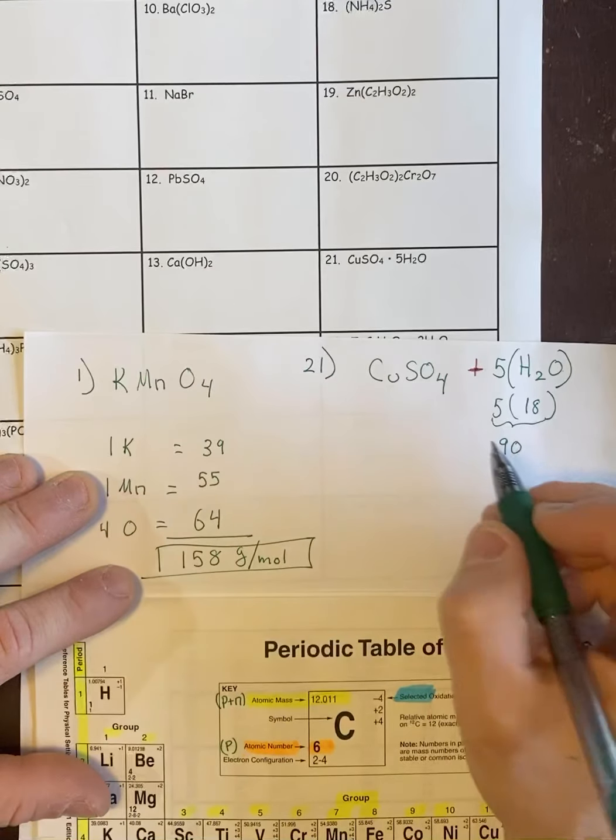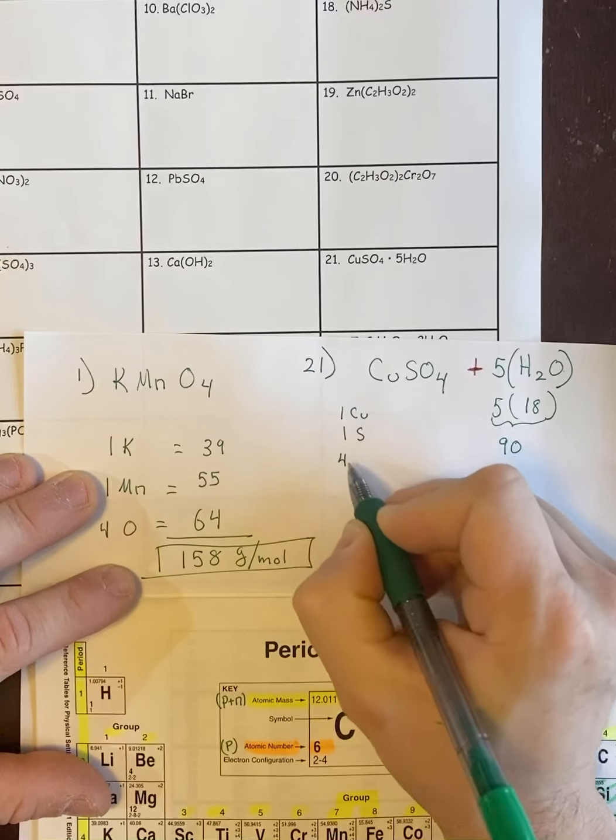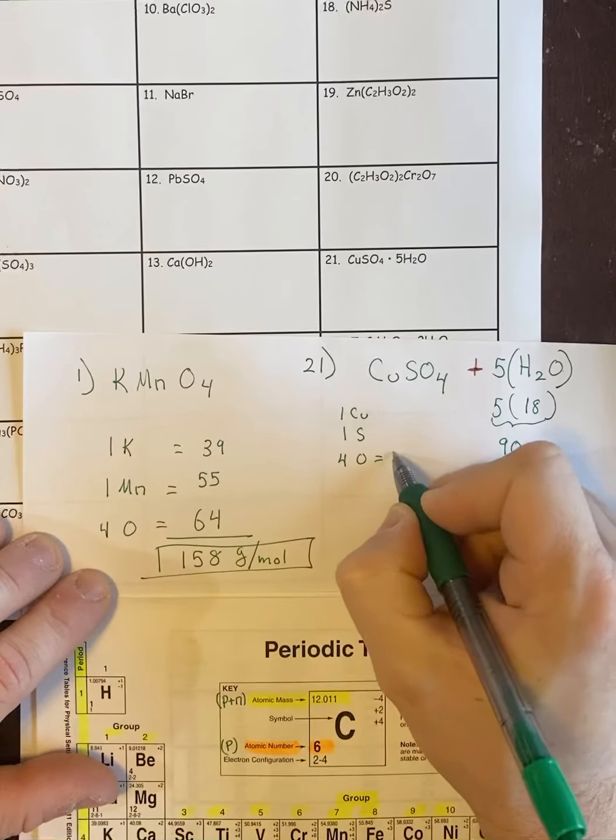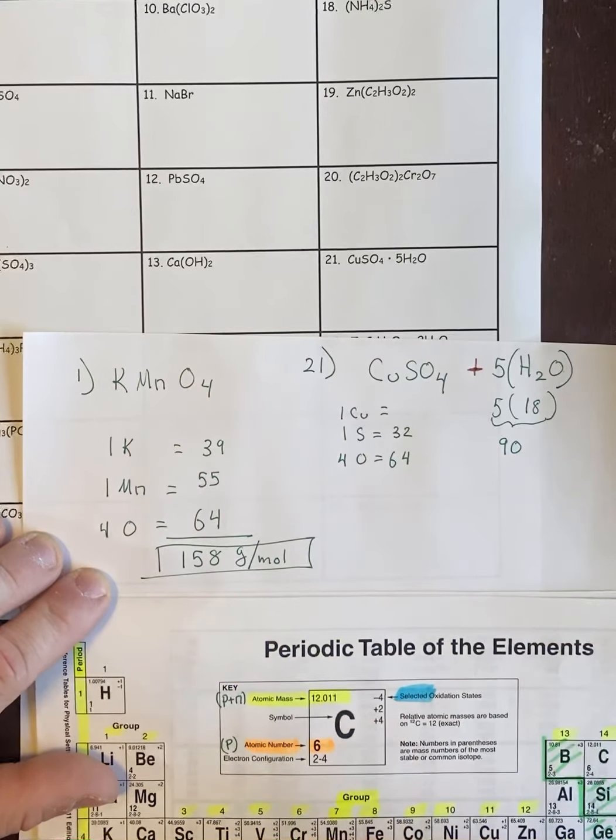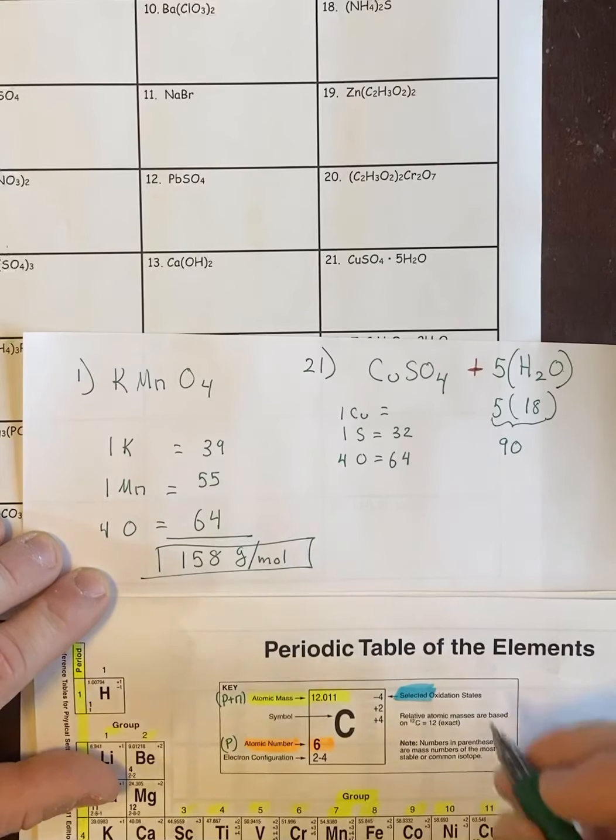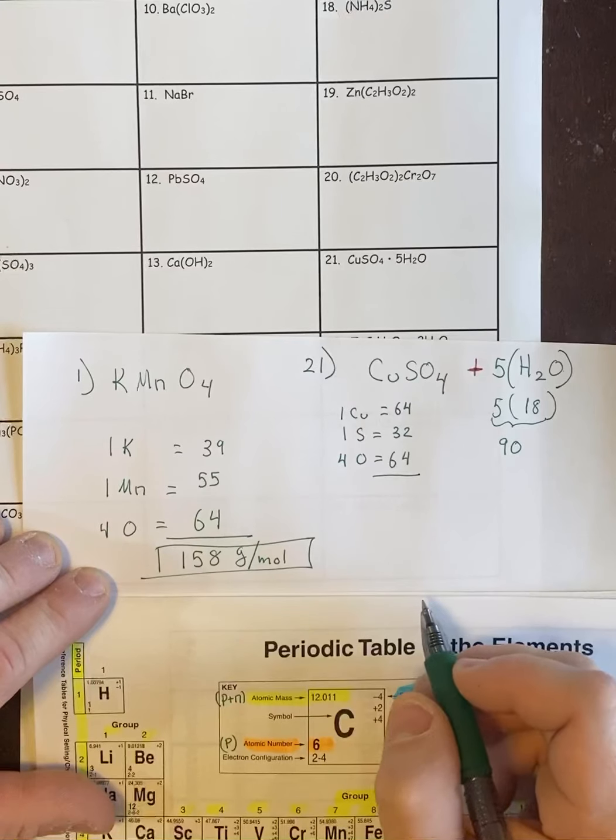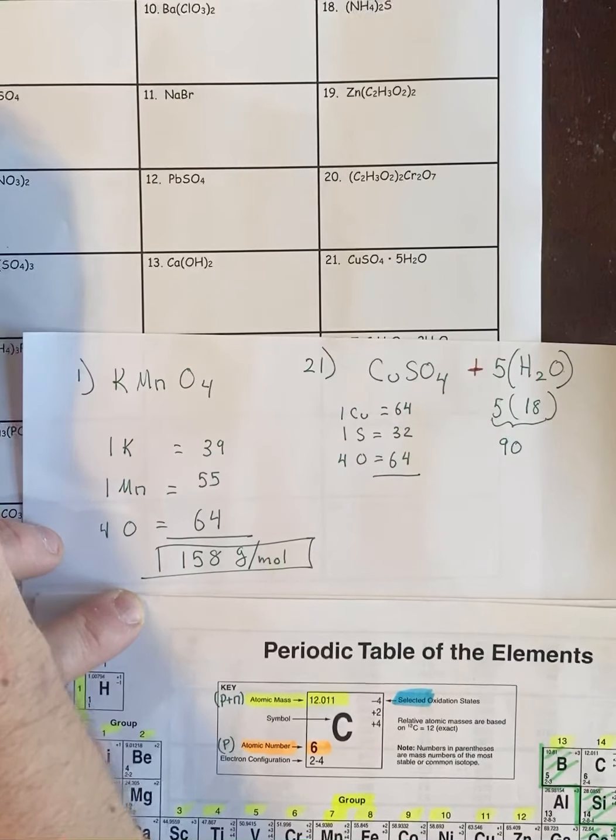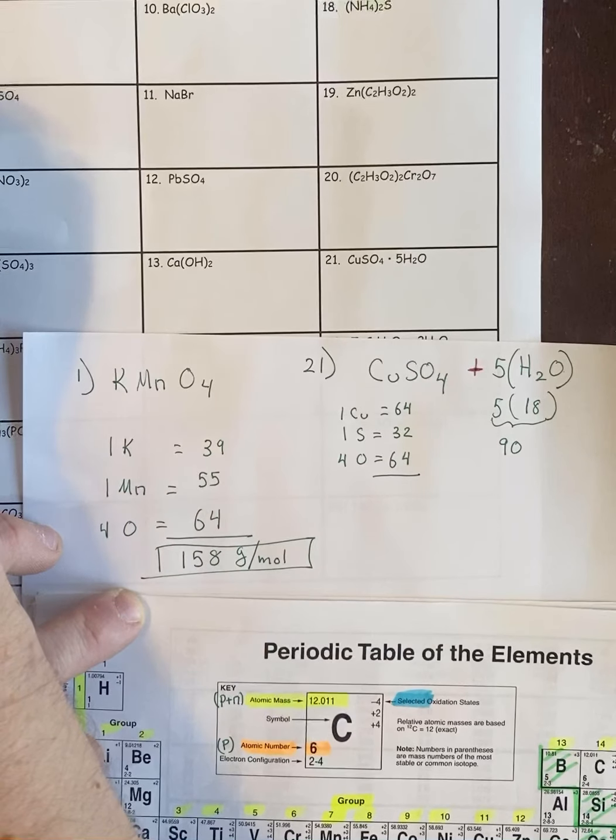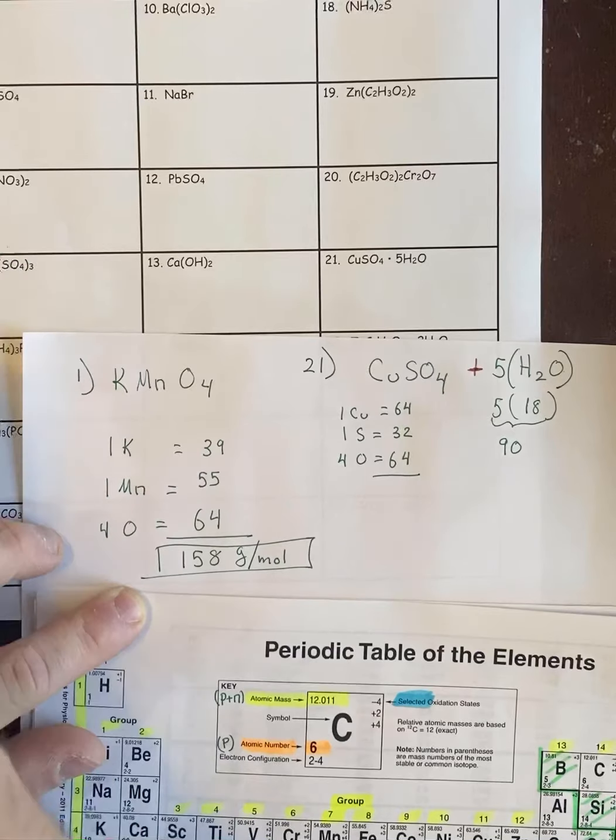Then you do your CuSO4, which is one Cu, one S, and four O. Four O we know is 64. One S is 32. And one copper rounded is 64. Add that all together. And the CuSO4 is going to weigh, let's see, 160.